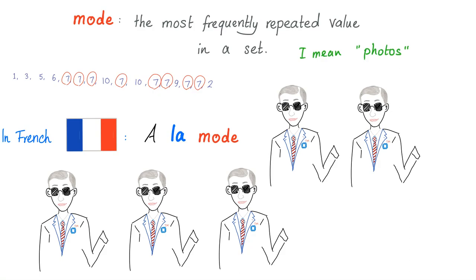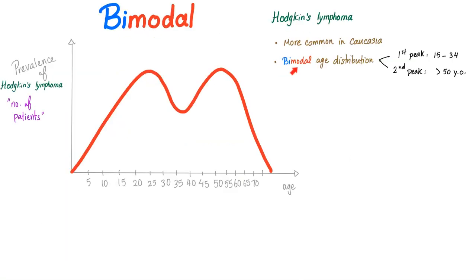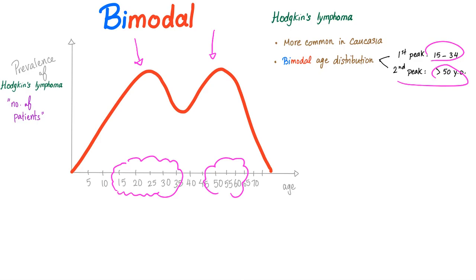Nothing major has happened to the textile industry for the last 70 years; the newest thing was the invention of polyester. Styles keep changing so that you keep buying them. Anyway — bimodal means there are two modes, two most repeated values in a set. The first repeated peak is patients who are between 15 and 34 years old, and the second peak is after 50. There are two modes.